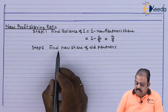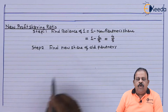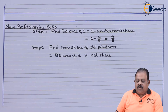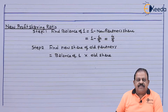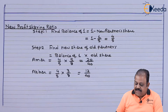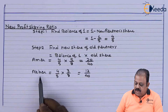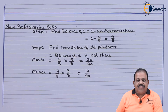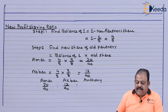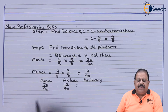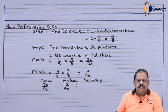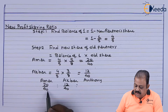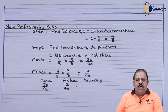Step 2: find new share of old partners. Formula is balance of 1 multiplied by their old share. Share of Amar: 4/5 × 5/8 = 20/40. Share of Akbar: 4/5 × 3/8 = 12/40. If entire profit is divided into 40 parts, 20 parts will be given to Amar and 12 parts to Akbar.